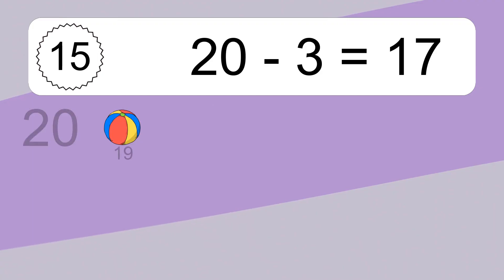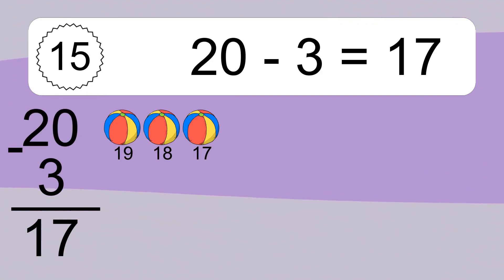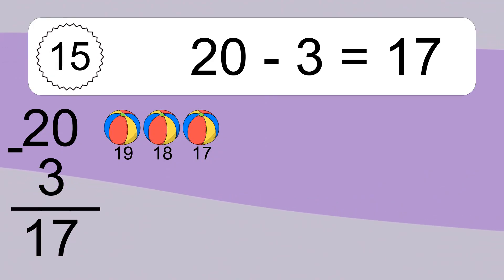20 minus 3 equals what? 20 minus 3 equals 17. Let's count it: 19, 18, 17.